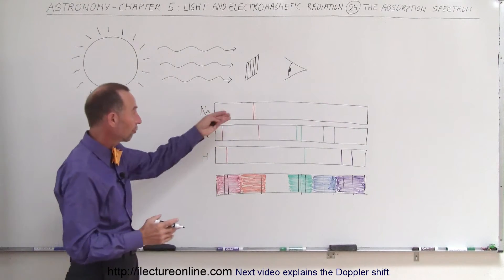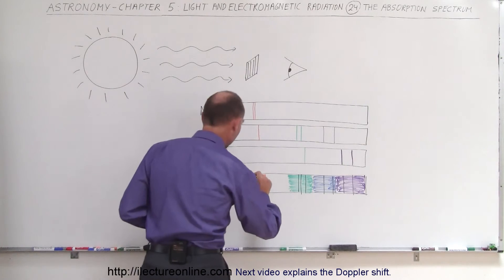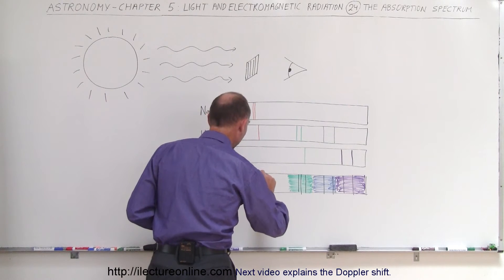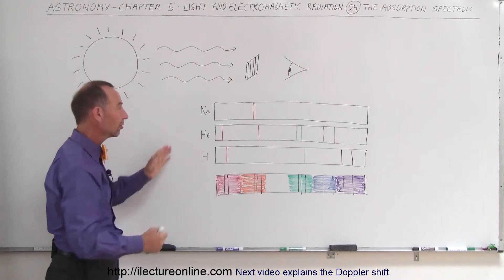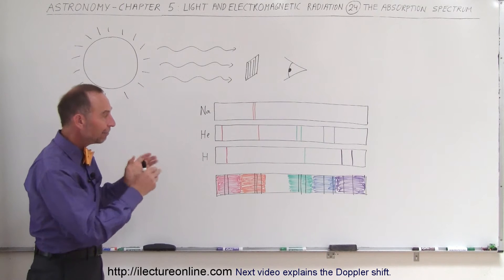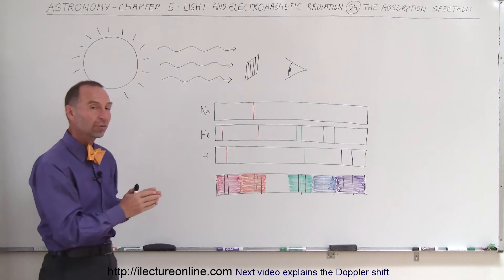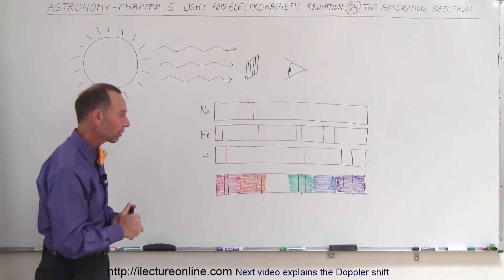And then, for example, for sodium, those very two bright lines side by side in sodium, meta-orange, they would be missing on the sun as well. Every element that has a specific set of colors, and of course those aren't the only colors for sodium, but the two prominent lines on sodium, every color would be missing on the sun's spectrum. Those colors were simply absorbed, and that's why we call it an absorption spectrum.